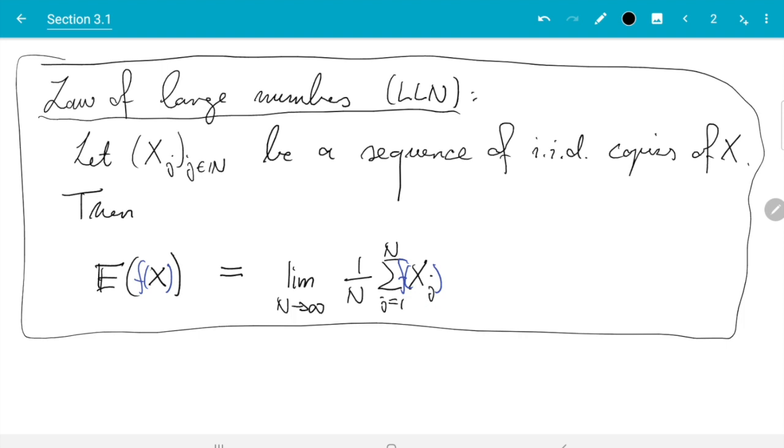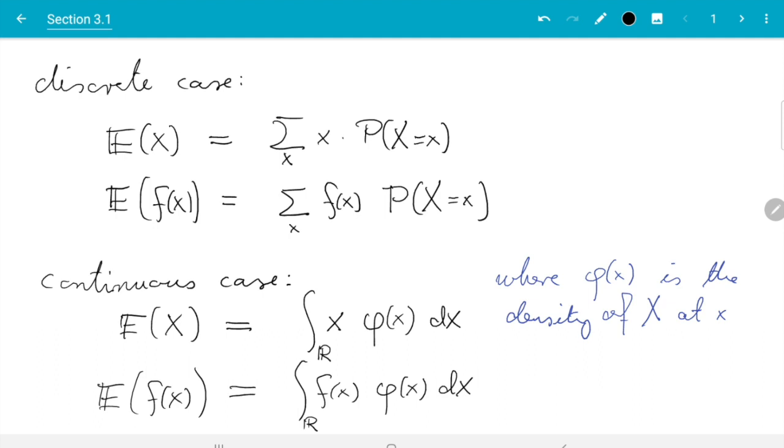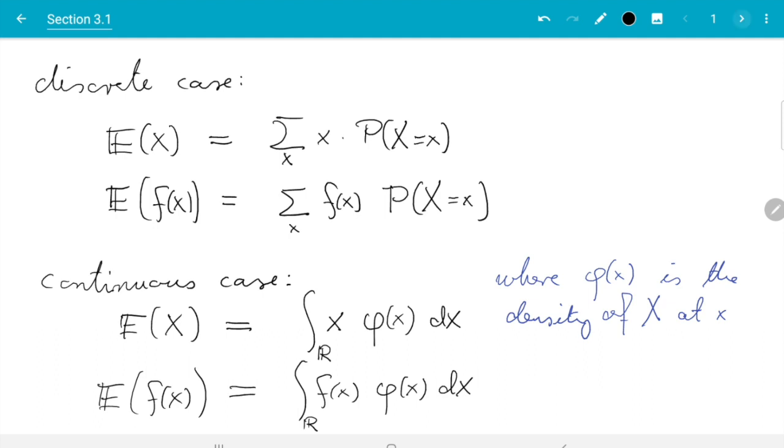Now the question is, is that any more useful than what we did before? So on the previous page, we wrote the expectation as an integral or sum. Here we wrote it as a limit. And it turns out, and that is the whole point of this module, that actually the second form is often useful.